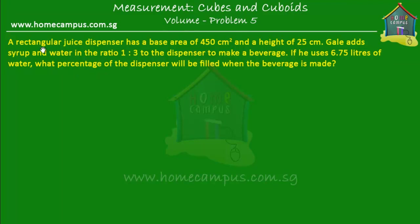A rectangular juice dispenser has a base area of 450 cm² and a height of 25 cm. Gale adds syrup and water in the ratio 1 to 3 to the dispenser to make a beverage. If he uses 6.75 litres of water, what percentage of the dispenser will be filled when the beverage is made?